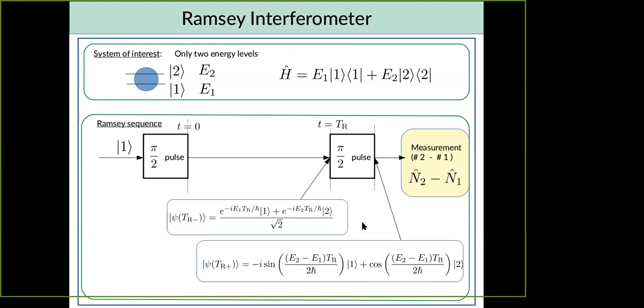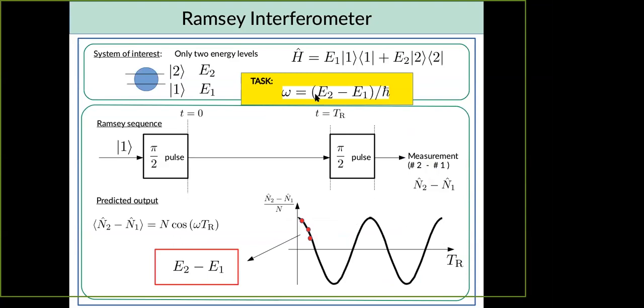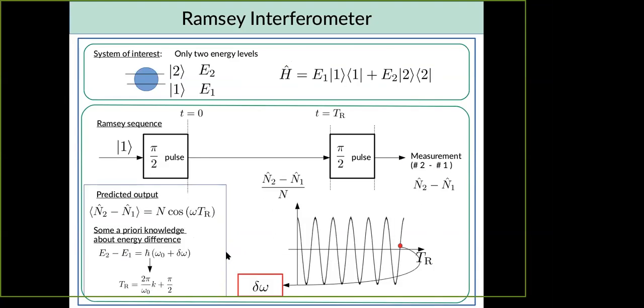I think the crucial part here to understand the relation between the final measurement and the relative phase is this π/2 pulse. Because before π/2 pulse, these energies E1 and E2, they are encoded in phase factors. And after π/2 pulse, these differences in energies, they are encoded in populations of one and two. And how we can use this sequence? So imagine that your task is to measure energy difference E2 minus E1. We can perform this Ramsey interferometry. You can do it a few times changing interrogation time TR. Then you have to fit this N times cosine to the measured points. And from this fit, you can learn what was the difference of the energies E2 minus E1.